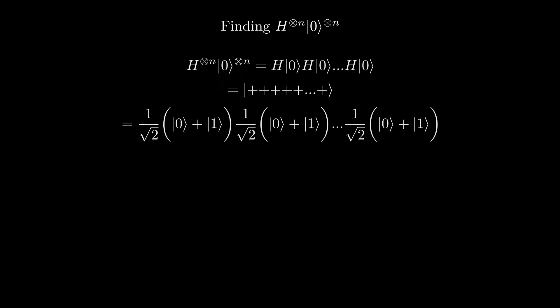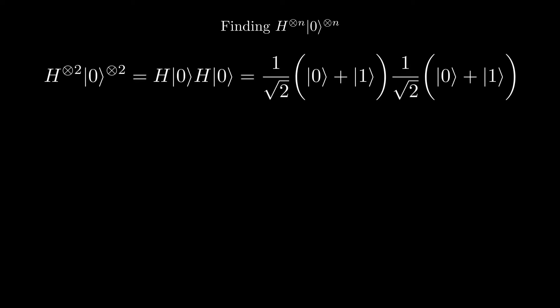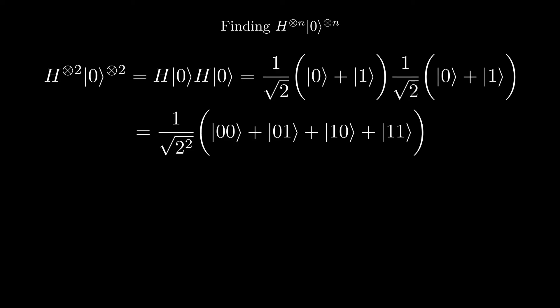Let's try different values of n to figure out how we can represent this mathematically. If n equals 2, we have the plus state tensored with itself. Distributing gives us (1/√2)², times |00⟩ + |01⟩ + |10⟩ + |11⟩.